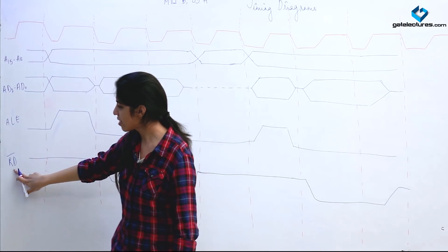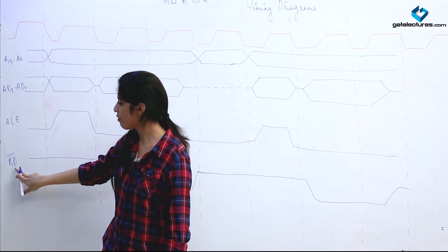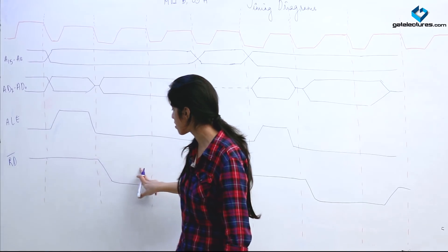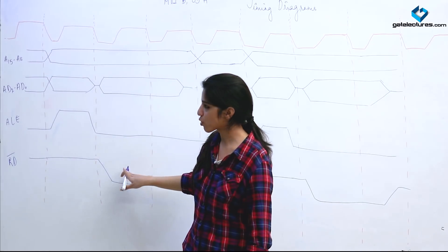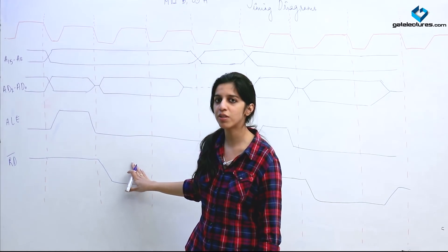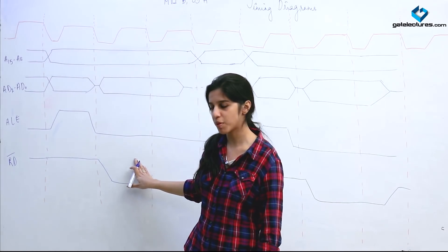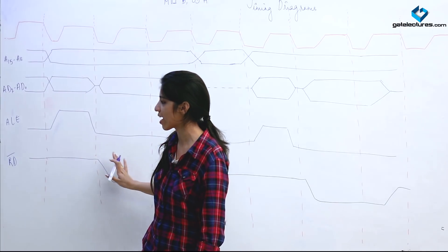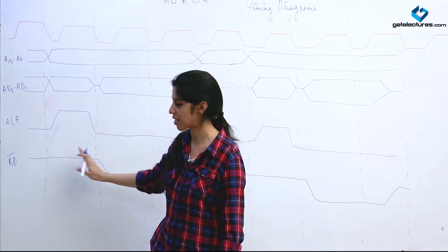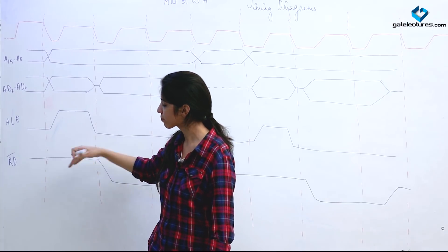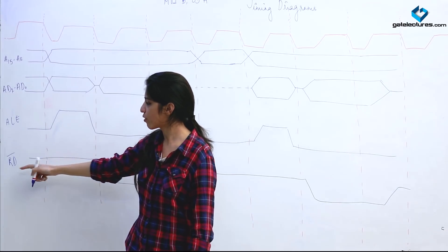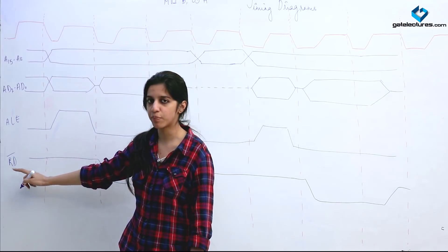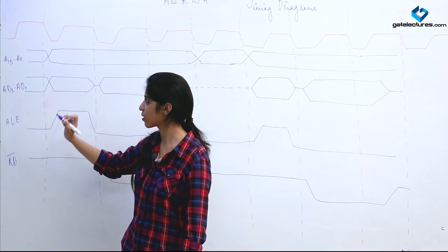The read bar signal controls reading: when read bar is 0, the processor reads something from memory; when read bar is 1, no reading takes place.